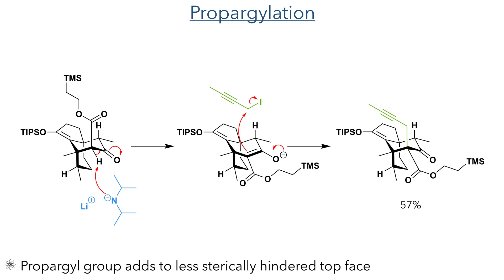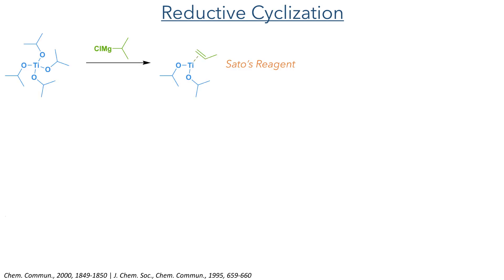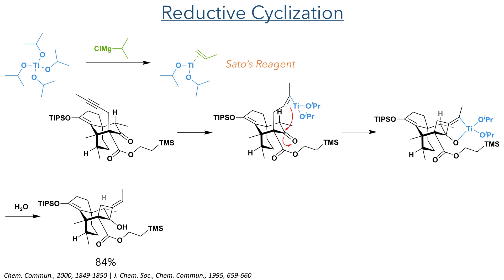The enolate formed is planar, and the propargyl group selectively adds to the less sterically hindered top face of the molecule. With this alkyne in place, it could then take part in a reductive cyclisation. Titanium isopropoxide is first reacted with isopropyl magnesium chloride to form a titanium-coordinated propene species known as Sato's reagent. This undergoes ligand exchange with the alkyne and forms a pi-bonded titanium intermediate that can add to the carbonyl, forming a cyclobutanol upon aqueous workup and hydrolysis of the titanium complex.